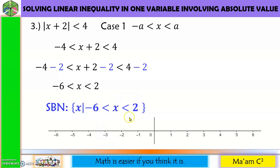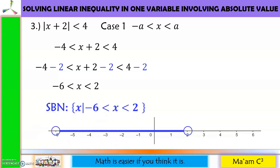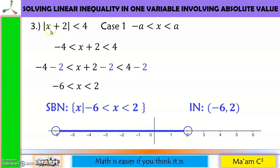Let us graph. For x less than 2, place an empty circle on 2, with the inequality pointing left. For x greater than negative 6, place an empty circle on negative 6, pointing right. The intersection gives us the interval notation: negative 6 excluded to positive 2 excluded. Quick check with x equals 0: the absolute value of 0 plus 2 is 2, and 2 is less than 4. Correct.